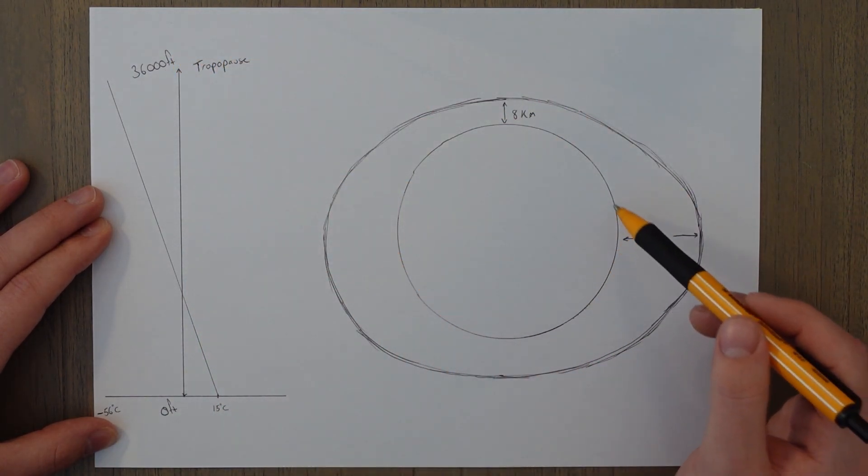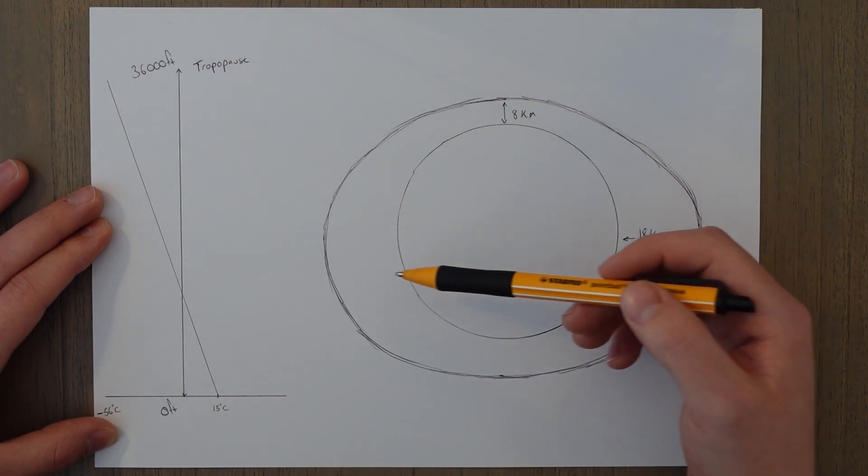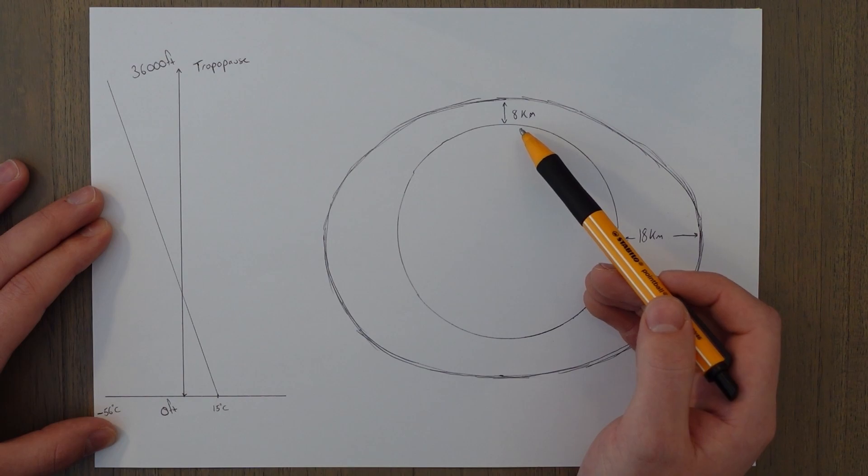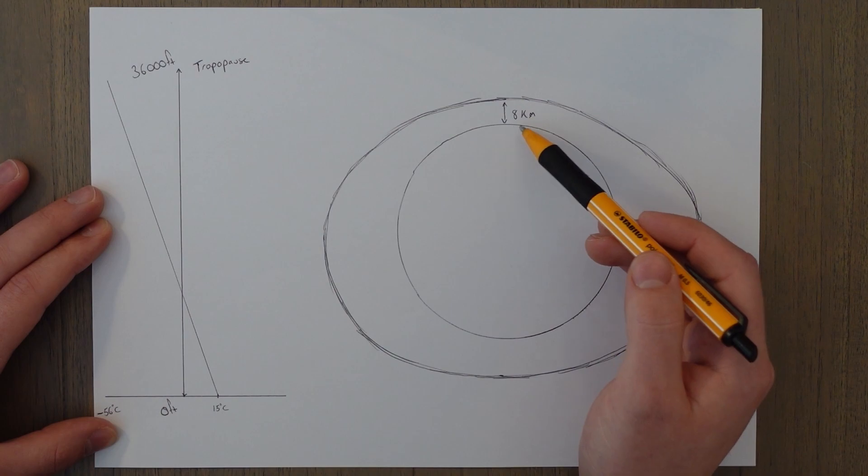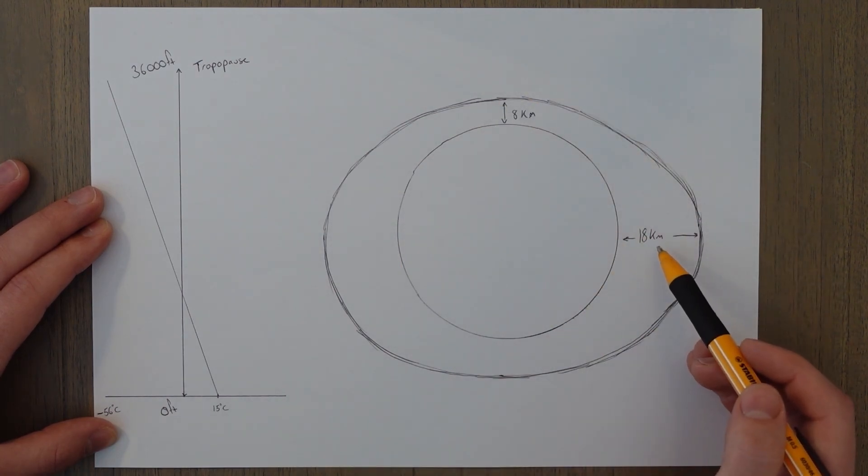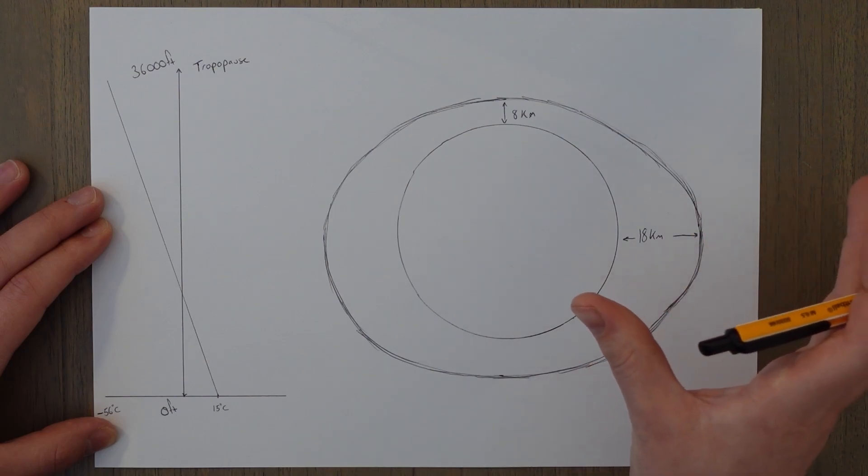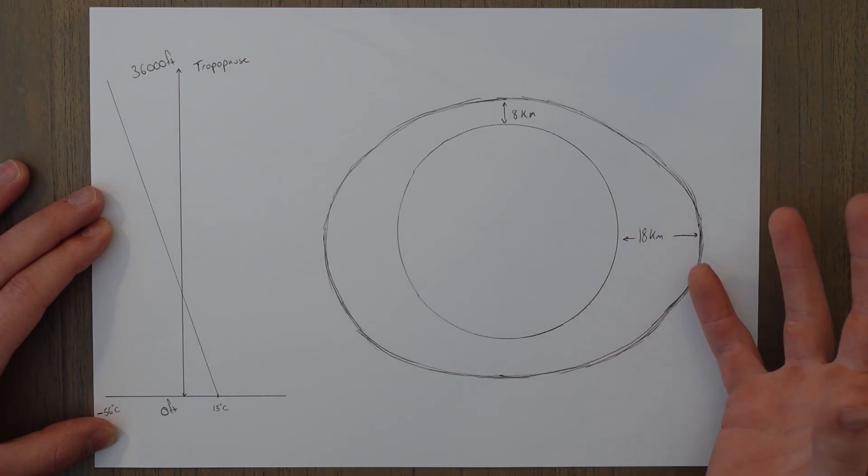The true height of the tropopause will change throughout the year and by latitude. At the north pole in the winter, for example, the air all compresses down and contracts so the level of the tropopause can be down as low as 8 kilometers. Conversely, at the equator in the summer the air expands out and the level of tropopause can expand up towards about 18 kilometers.